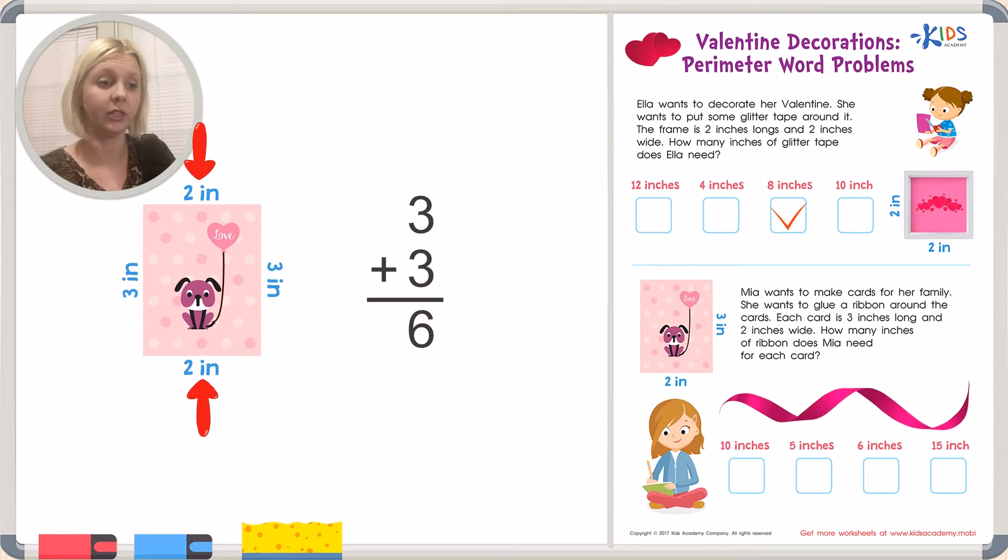Now I need to add up these 2 sides. So that would be 2 plus 2 is 4. And that gives me the total length and width. And now I need to add all of that up together. So 6 plus 4 equals what?